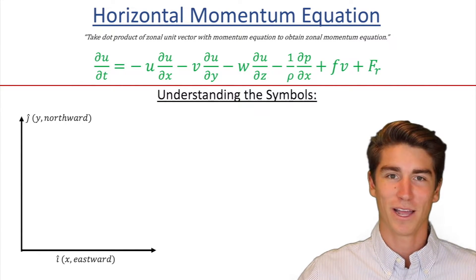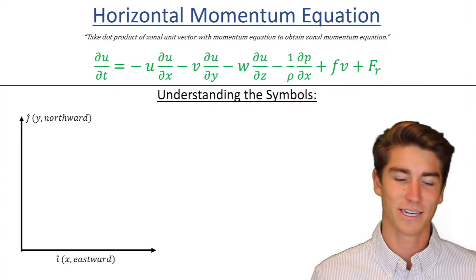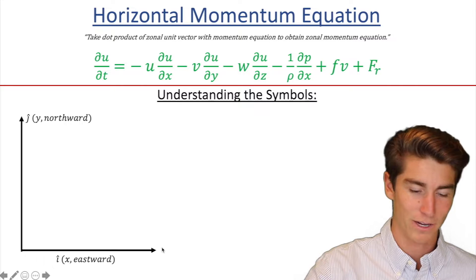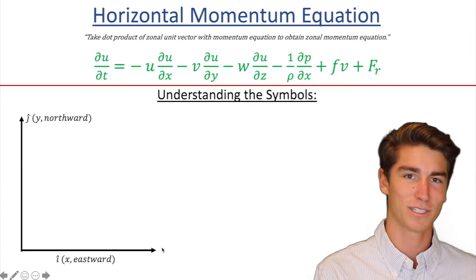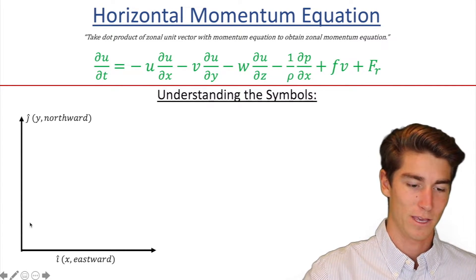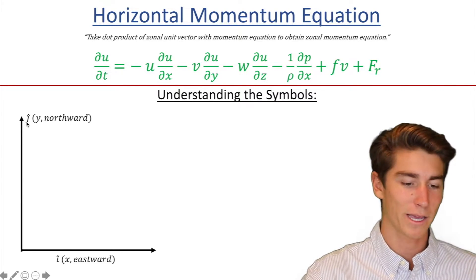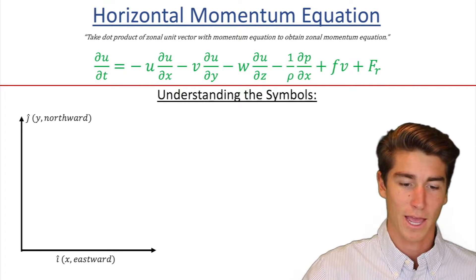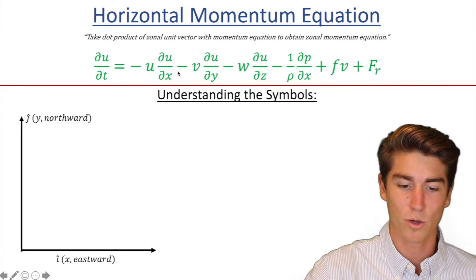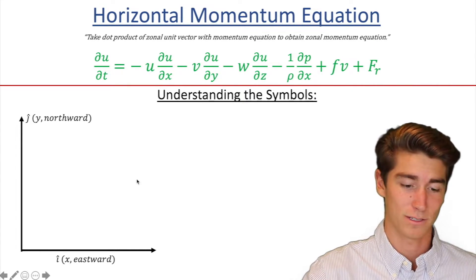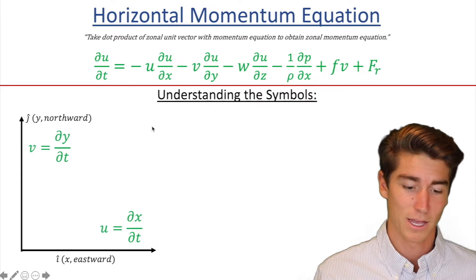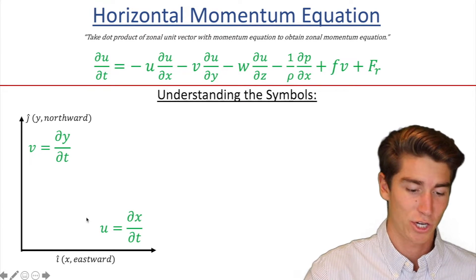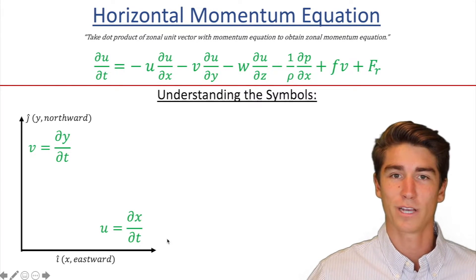We're going to start by getting our axes here. The x axis is going east, right down here. You can imagine that as like San Francisco to New York. The vertical axis, the y, is going to be northward, so like from San Francisco to Canada. And first we're going to look at what this u and v symbols are. So u is just going to be dx/dt, the change in x over time.